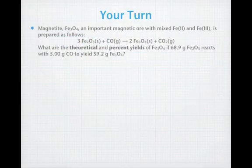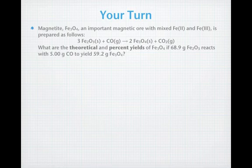Okay, now it's your turn. Let's take a look at this example problem. We have magnetite, Fe3O4, an important magnetic ore that has mixed iron 2 and iron 3, can be prepared by heating up Fe2O3 and carbon monoxide to produce the Fe3O4 and carbon dioxide. So, what I want to know is what are the theoretical and percent yields of the Fe3O4 if you react 68.9 grams of Fe2O3 with 5 grams of CO, and that yields 59.2 grams of Fe3O4 as your actual yield. I'm going to stop the recording and stop the video, and you do the calculations, go all the way through to the percent yield, and start it up after you're done.